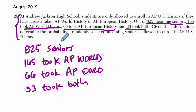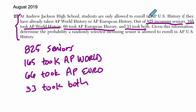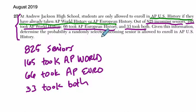Given this information, determine the probability that a randomly selected incoming senior is allowed to enroll in AP US History. To figure that out, let's go back to the beginning — they can enroll if they've already taken AP World or AP Euro. So we need to find how many took AP World or AP Euro.